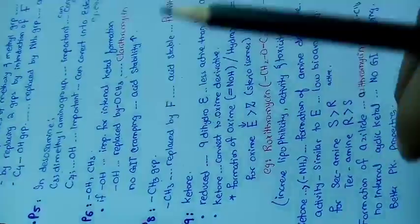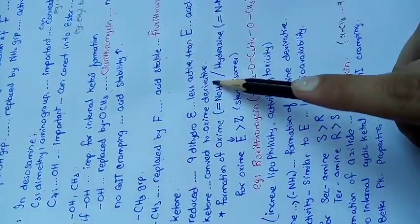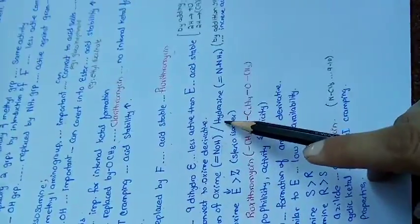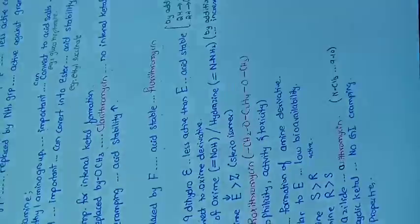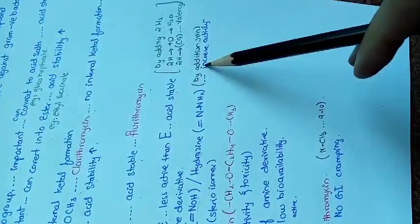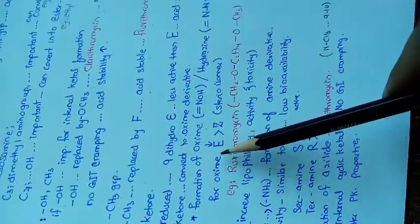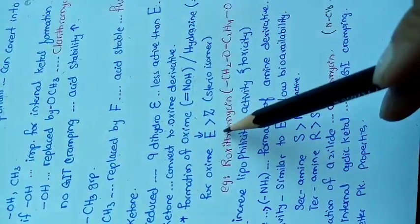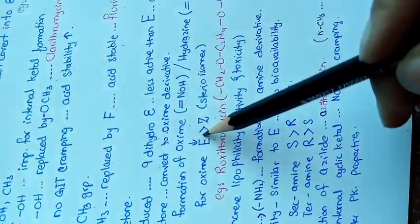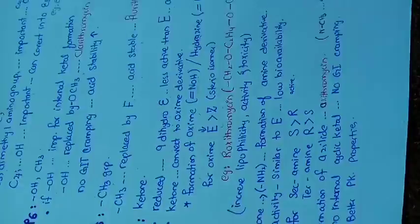At position 9, formation of an oxime can also occur. If the ketone is converted into an oxime derivative by adding N-OH, or a hydrazine derivative by adding hydrazine, these groups are added by addition reaction. For oxime formation there are two stereoisomers: the E stereoisomer and the Z isomer.